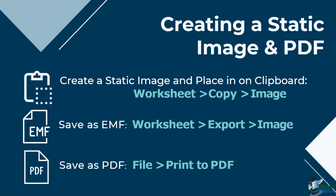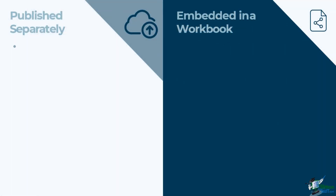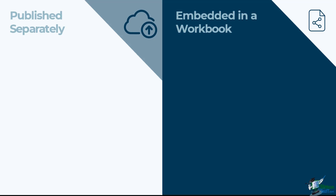Another consideration when sharing a workbook is whether to publish a data source separately or have it embedded in the workbook. Publishing data sources separately is a step towards centralizing data management. You can create policies geared toward minimizing data source proliferation and helping people find the right data for the work they do.